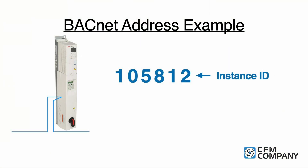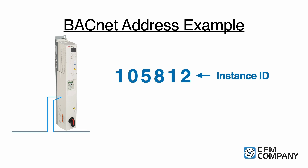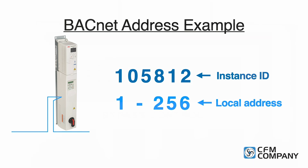The information for this example shows that the last two digits of the instance ID will be the local address. The local address can also be referred to as the MAC address, the station ID, or the device address. The local ID is not always the last two digits of the instance ID — it can be a unique number between 1 and 256.